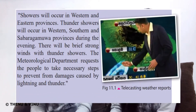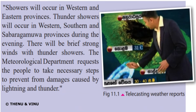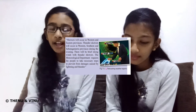On the screen you can see a weather forecast telecast. Let's read it: Showers will occur in western and eastern provinces. Thunder showers will occur in western, southern and Sabaragamuwa provinces during the evening. There will be brief storm winds with thunder showers. The meteorological department requests the people to take necessary steps to prevent damages caused by lightning and weather.